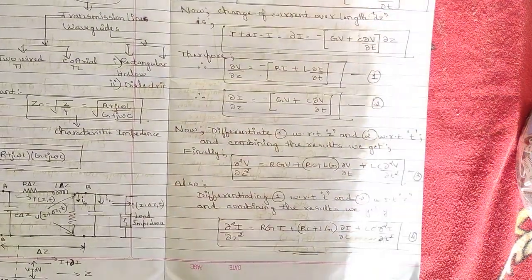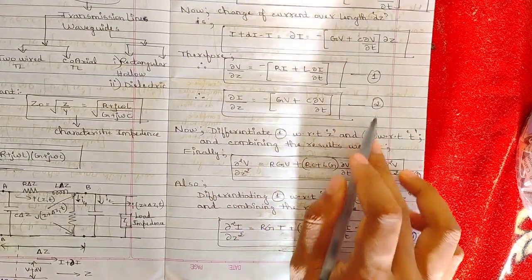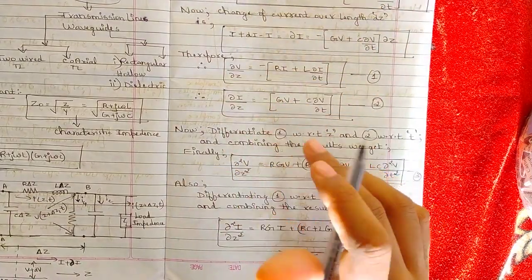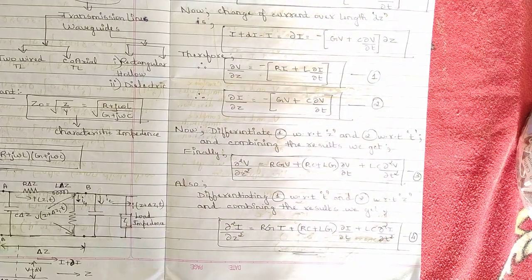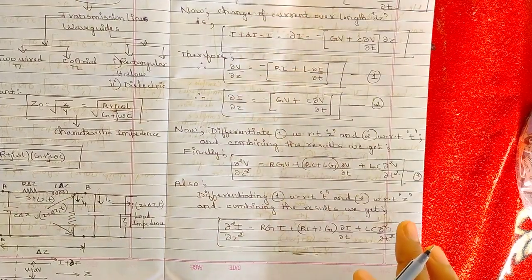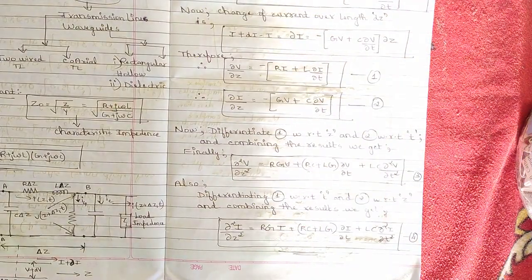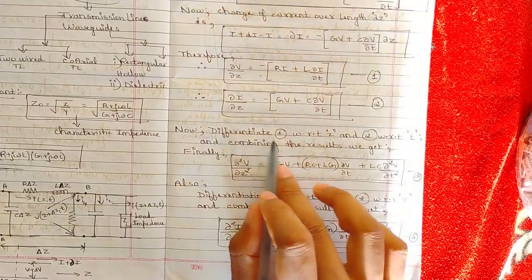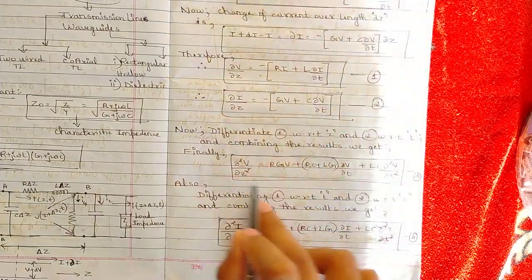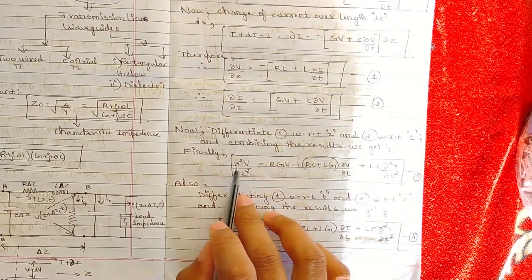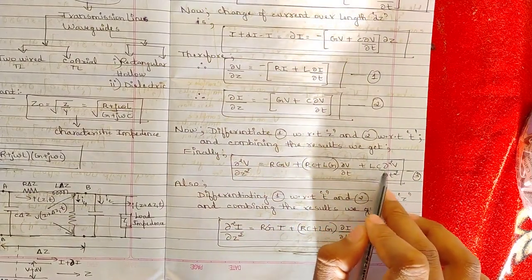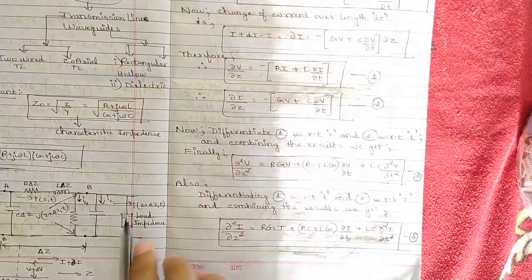Differentiating Equation 1 with respect to z and Equation 2 with respect to t, then combining the results, we get Equation 3: ∂²v/∂z² = R·G·v + (R·C + L·G)·∂v/∂t + L·C·∂²v/∂t². The intermediate differentiation steps span about one page, so we go directly to the combined result.